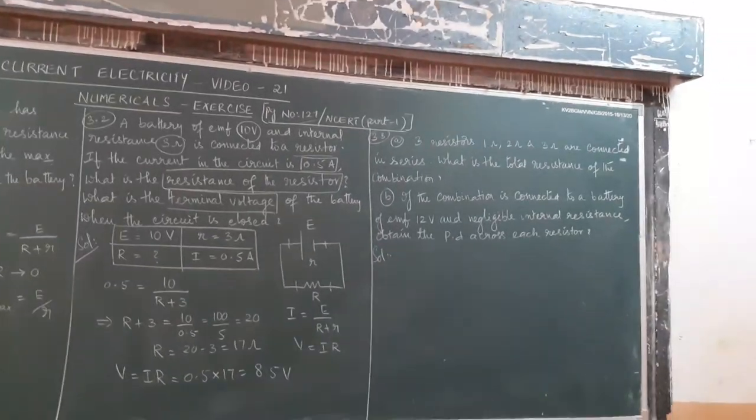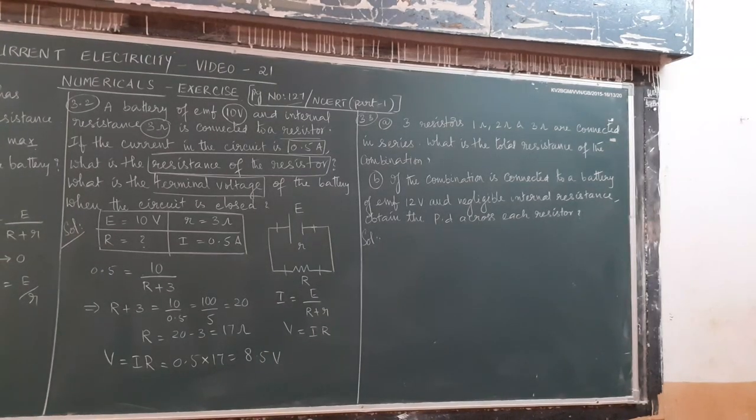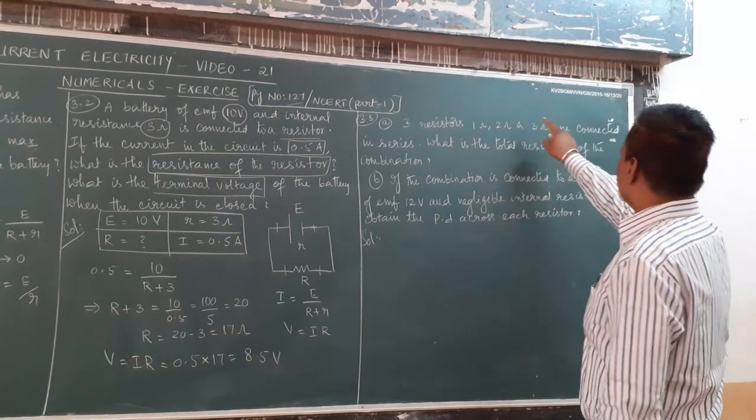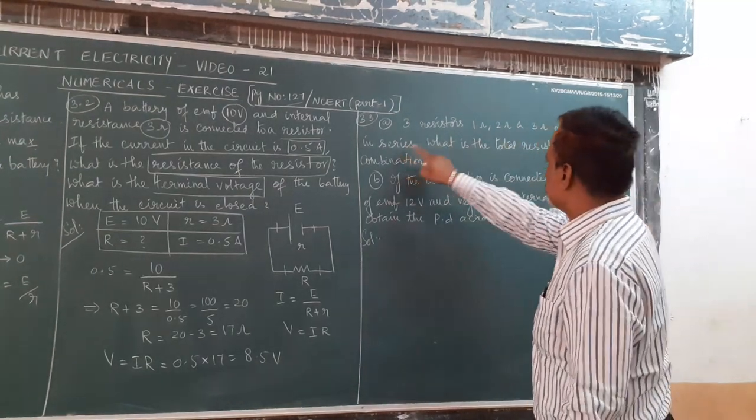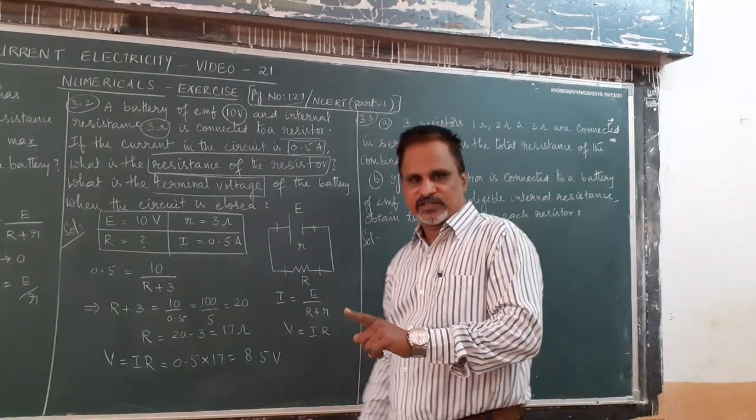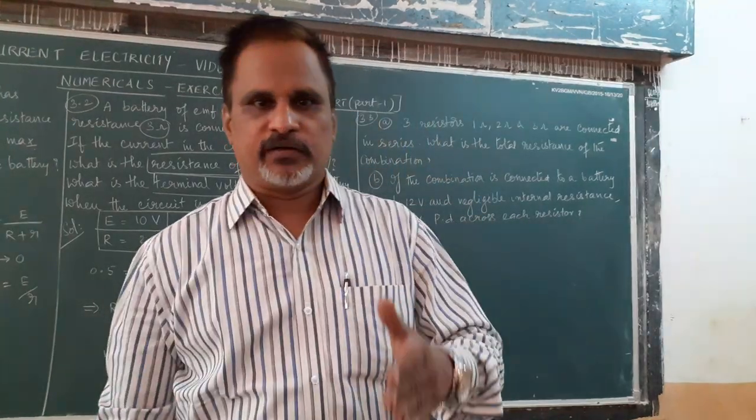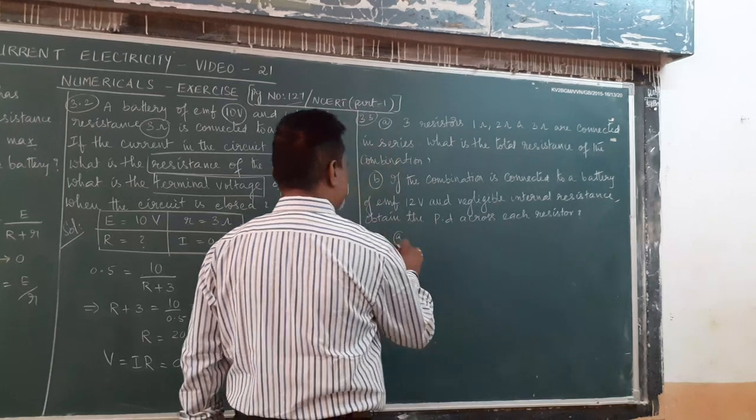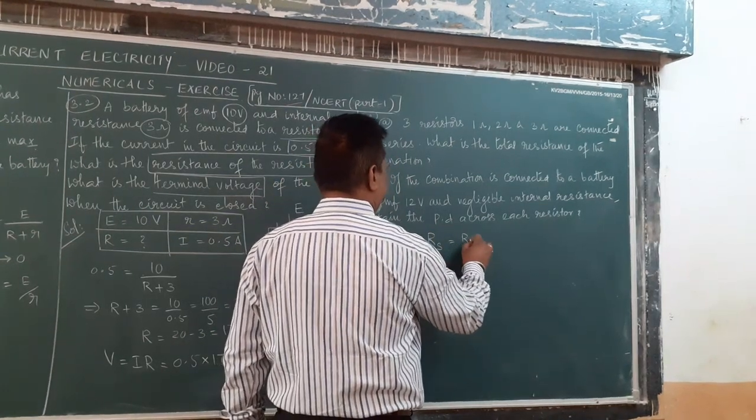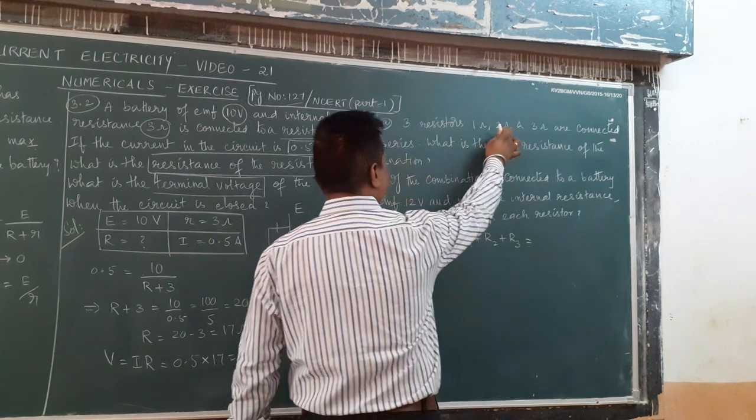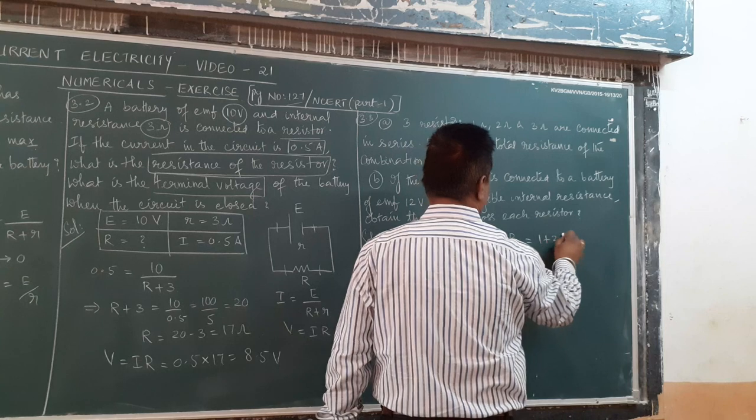Next, we go for third numerical. There are three resistors: 1 ohm, 2 ohm and 3 ohm connected in series. What is the total resistance of the combination? Very simple. In series combination, the effective resistance will be sum of the three resistors. R1 plus R2 plus R3 equals 1 plus 2 plus 3, which is 6 ohms.